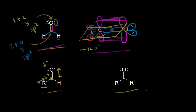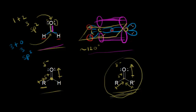Looking at a ketone, we have a similar situation: the oxygen withdraws electron density, giving a partial negative on the oxygen and a partial positive on the carbonyl carbon. But this time we have two R groups, both donating electron density. The more R groups you have, the more the partial positive charge on the carbonyl is stabilized. Because of that, ketones are a little bit more stable than aldehydes — there's more polarization in an aldehyde carbonyl than in a ketone.